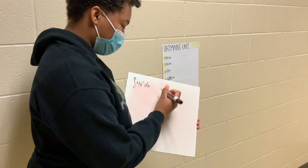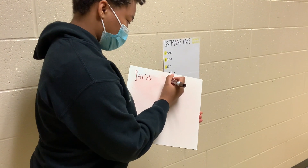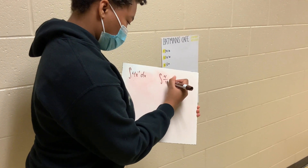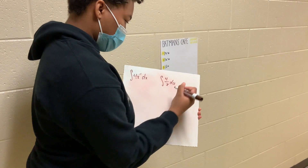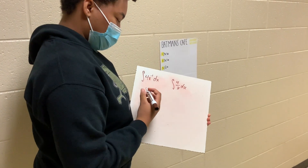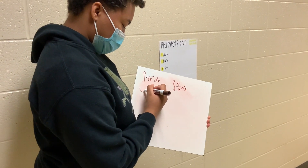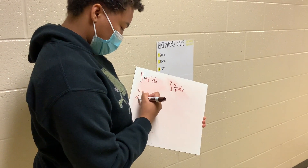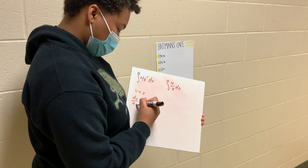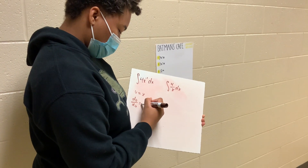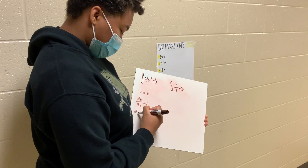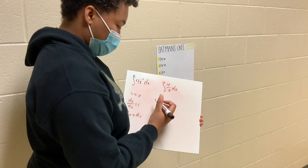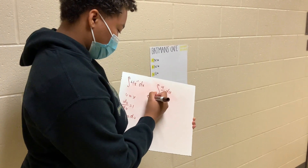So the first thing we're going to do is try to reformat it to make it look a lot better and easier to solve. Then we're going to want to do the u-sub, so we set x equal to u, and then take the derivative of both sides. Then we want to get dx by itself, so dx is equal to du. After that, we plug it back into the equation.